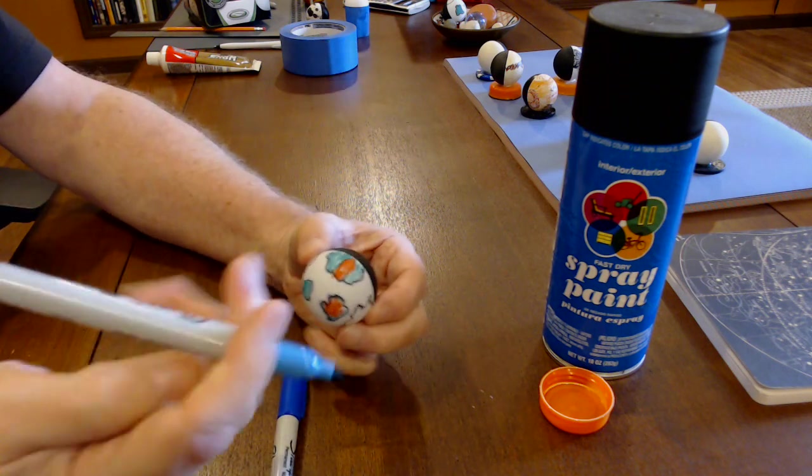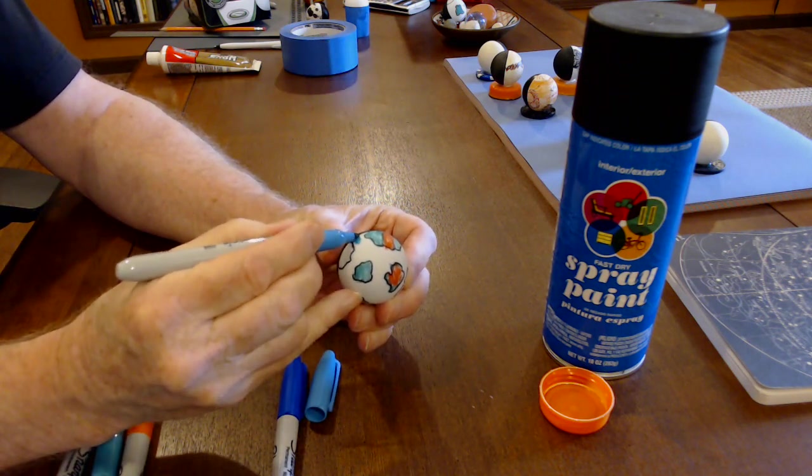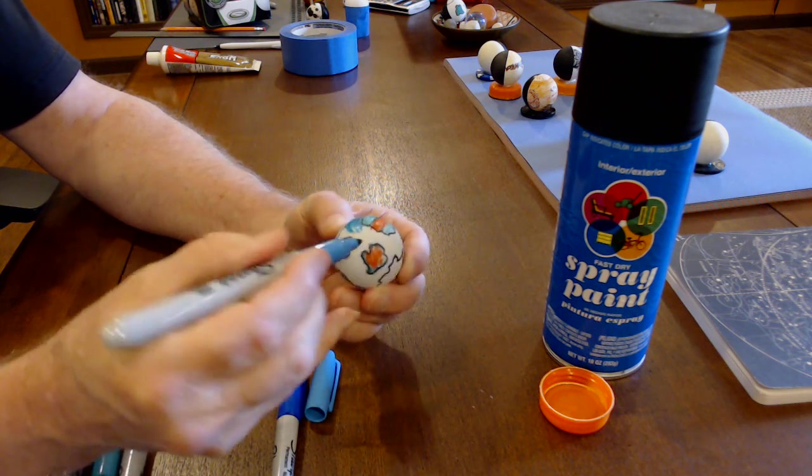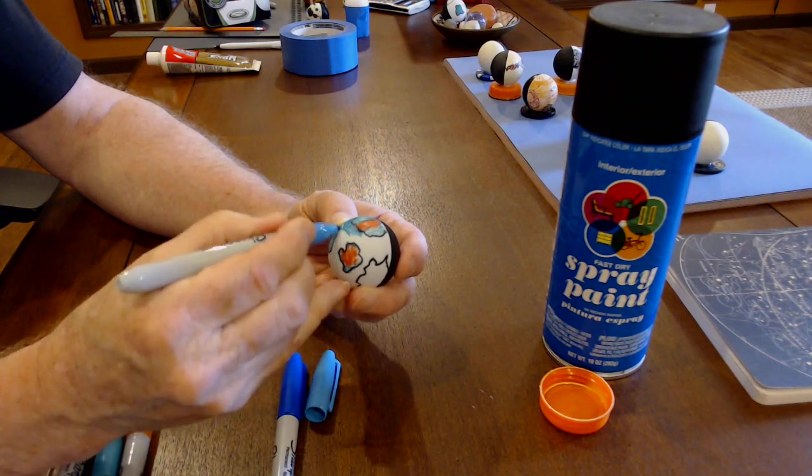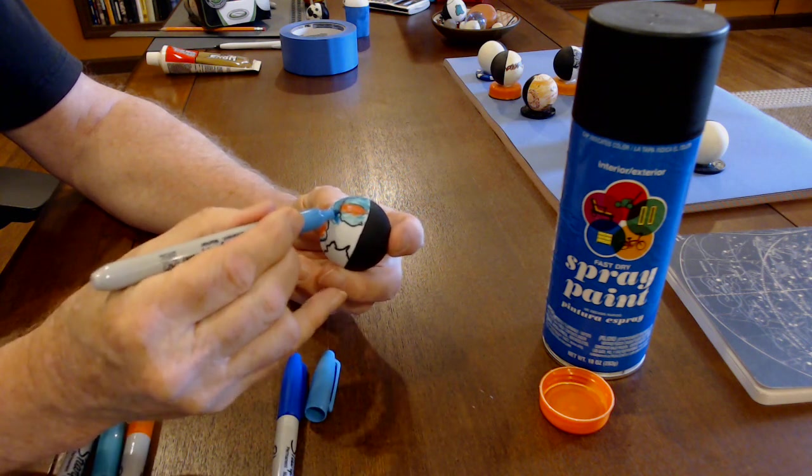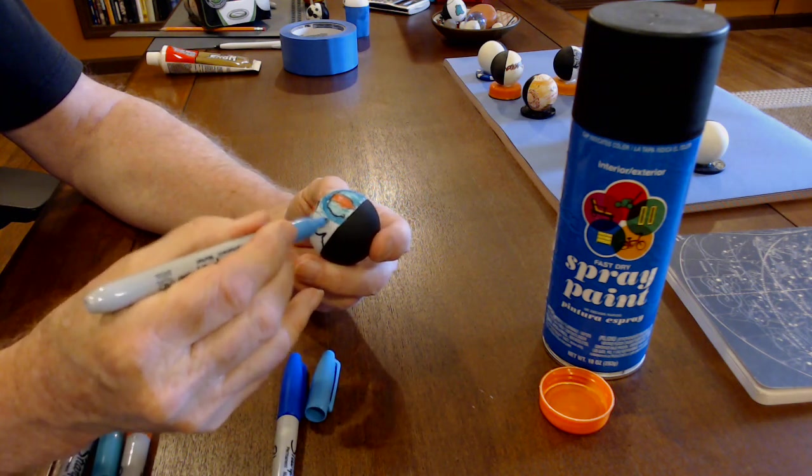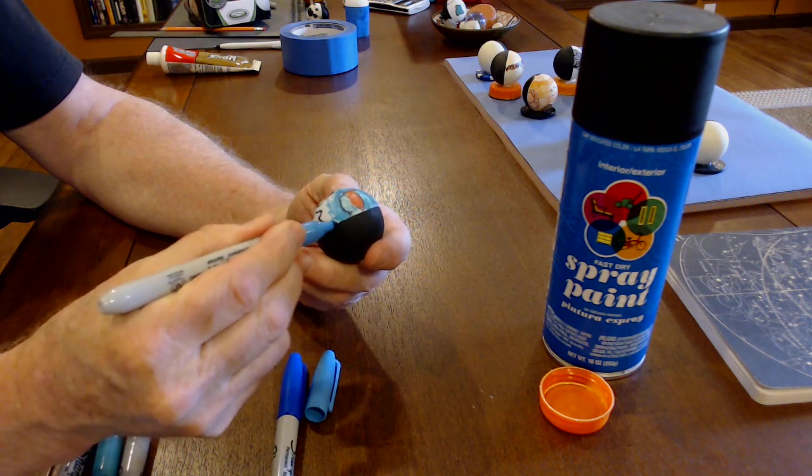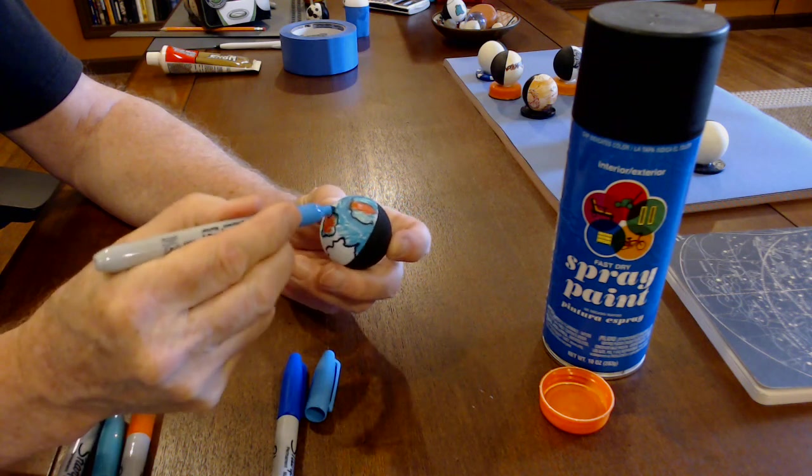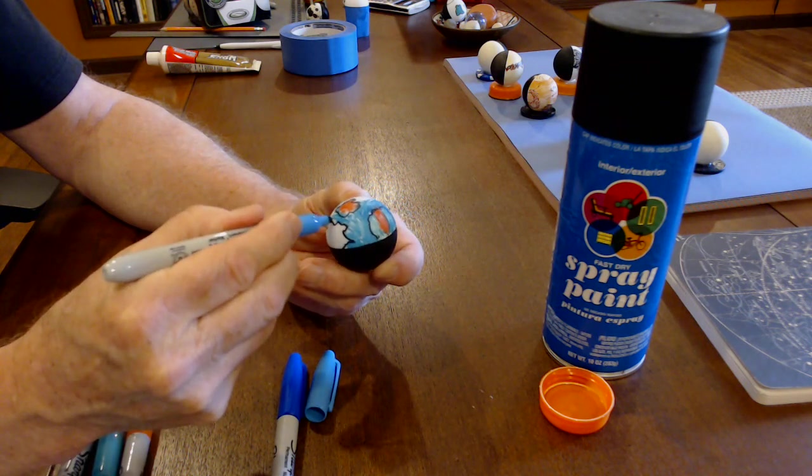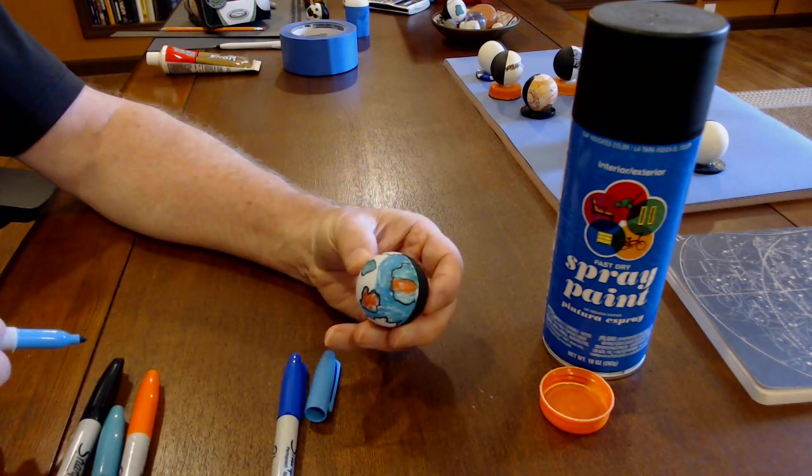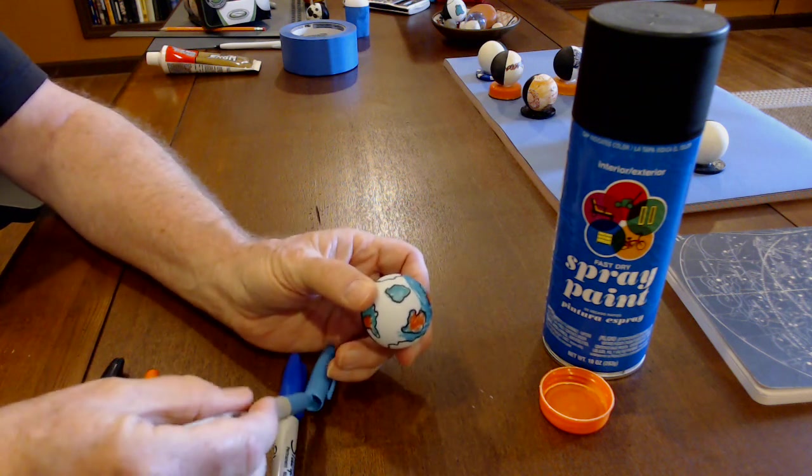I'm going to use a blue marker and let's go ahead and make some blue oceans. And again, I'm not going to take a great deal of time with this trying to make a short and informative video, but I'm going ahead and I'm coloring in oceanic areas here.